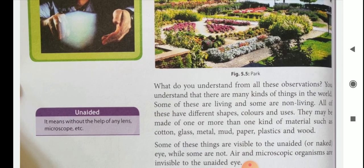So what do we understand from the above observation? We understand that there are many kinds of things in the world. Some of these are living and some are non-living. All of them have different shapes, colors, and uses. They may be made of one or more than one kind of material such as cotton, glass, metal, mud, paper, plastic, and wood.